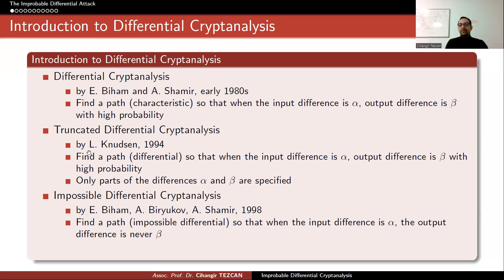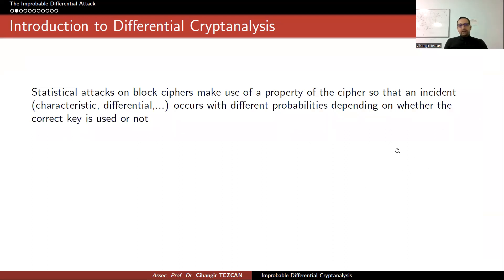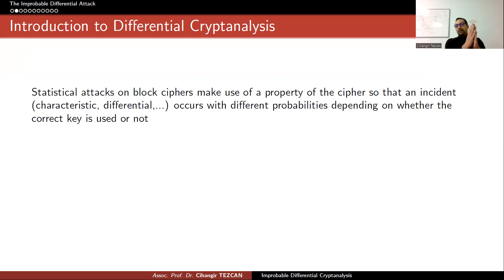The question is: can we have something with a probability that is not zero, but close to it? Statistical attacks on block ciphers make use of a property of the cipher so that a differential characteristic occurs with different probabilities depending on whether the correct key is used or not. The distinguisher happens with different probabilities for the cipher versus the random permutation. For the correct key, that probability holds for the cipher, and we assume wrong keys behave like a random permutation — what we call the wrong key randomization hypothesis — so these two binomial distributions are mapped to finding correct and wrong keys.